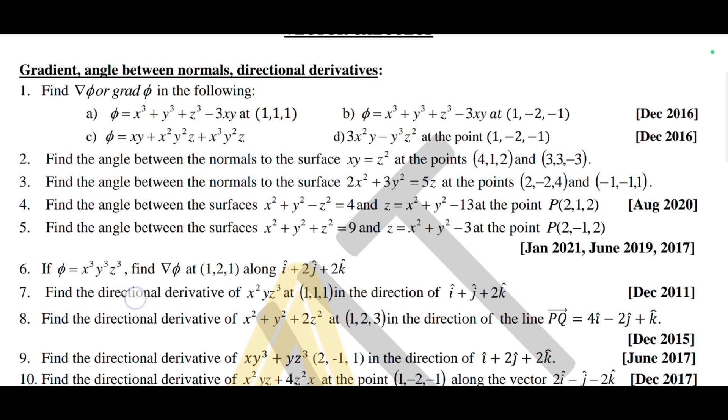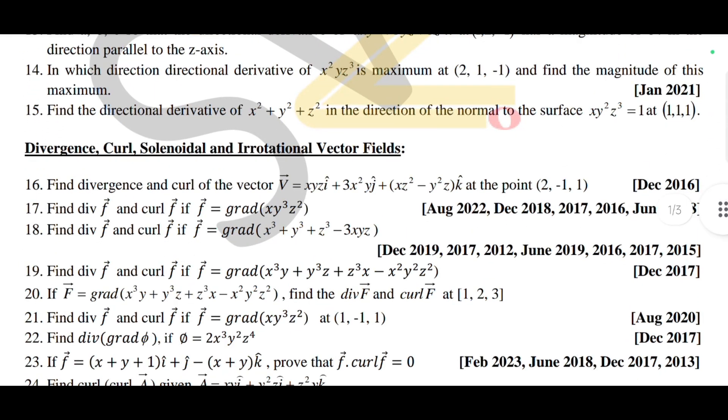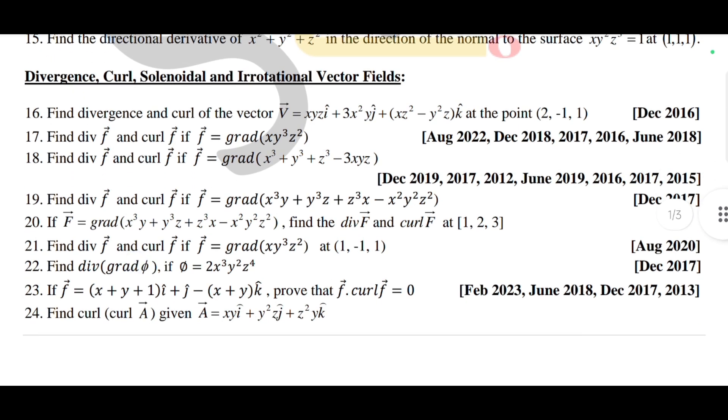Similarly, here we have the second variety - divergence, curl, solenoidal and irrotational vector fields. These are most important questions and you have to go through questions 16, 17, 18, and 23rd question. You have to go through these important questions and also practice those questions which will be in the previous year question papers of your scheme, that is 2022 scheme. These are questions from previous schemes.